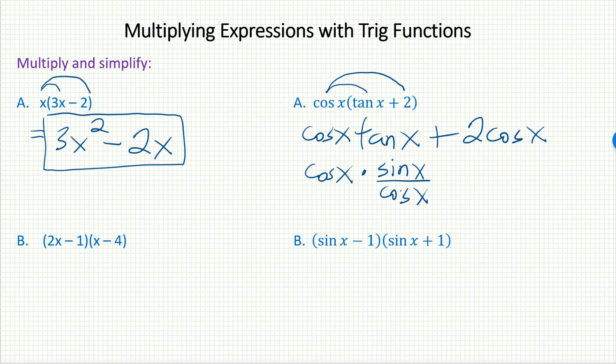That's the quotient identity. And then these cosine x's would cancel out, would divide out, leaving me with just sine x plus 2 cosine x. This would be the simplest I can make it. And so here is the final answer.